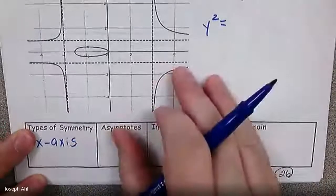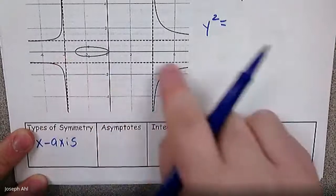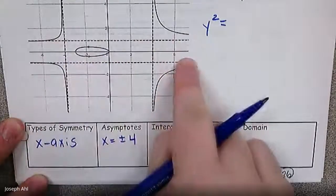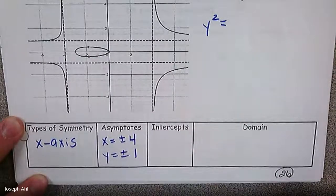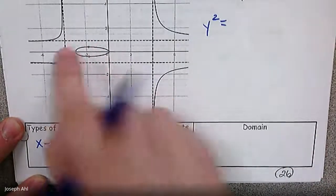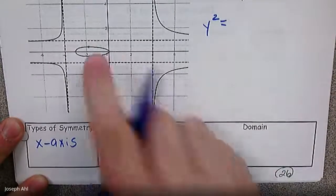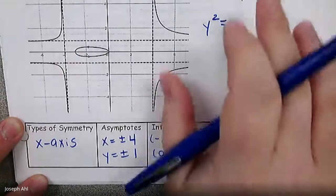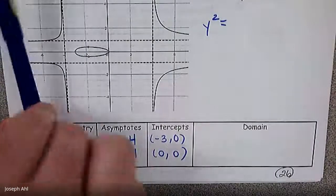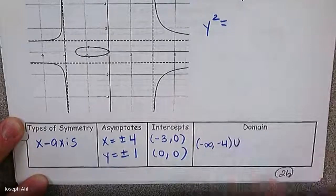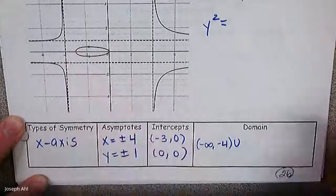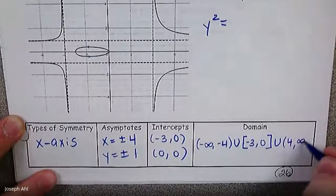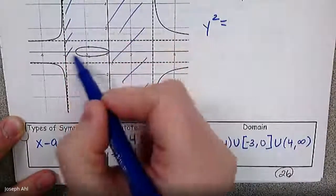Whenever something's symmetric about the x-axis, we know it's a y-squared equation. For asymptotes, it looks like we have a vertical asymptote at negative 4 and another at positive 4, so x equals plus or minus 4. The horizontal asymptotes are in the same place as before: y equals plus or minus 1. We have intercepts at negative 3 comma 0 and also at the origin, 0 comma 0 — which counts as both an x-intercept and a y-intercept. For domain: negative infinity to negative 4, then negative 3 to 0 with brackets, then 4 to infinity.